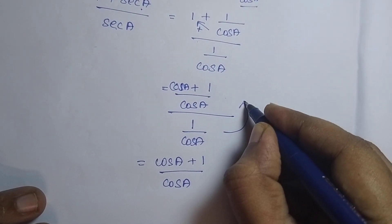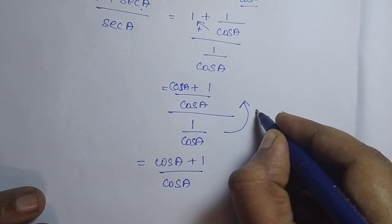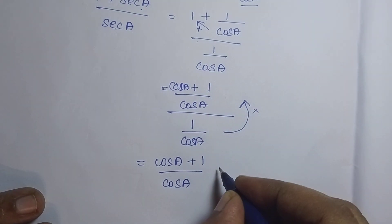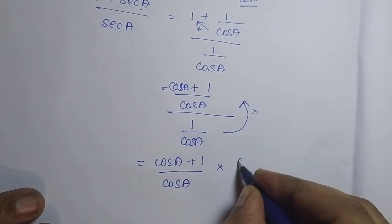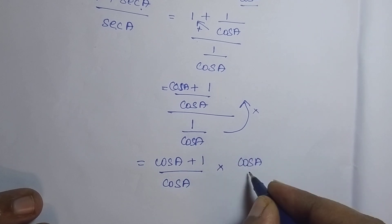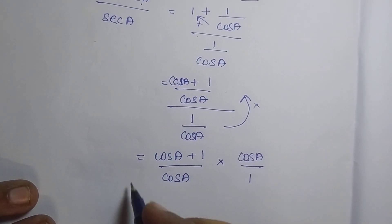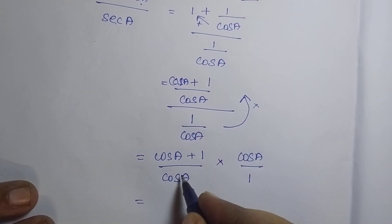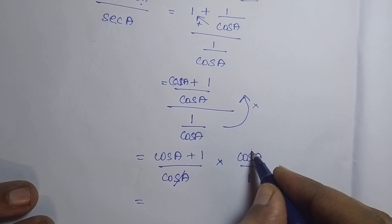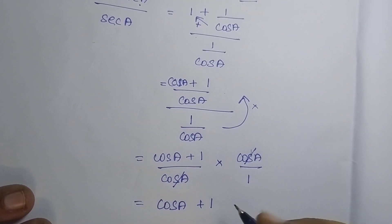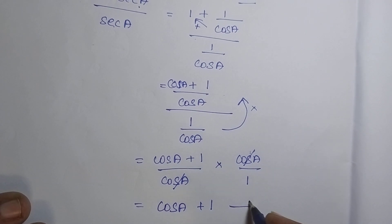So if we move this towards the upper part, then it gets broken. So, into cos A by 1. Therefore, this cos A and this cos A get cancelled. The remaining is cos A plus 1. Let's keep this as equation 1.